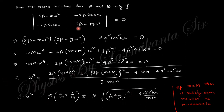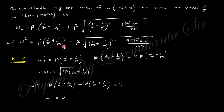If small m and capital M are equal — the monoatomic condition — we obtain the same relation as in the monoatomic chain from the previous lecture. Rearranging, we get ω² with plus and minus signs — two possibilities. In the monoatomic case only one ω value was possible, but here there are two possible values of ω² for each k. At k = 0, ω₊² equals a specific value and ω₋ = 0.